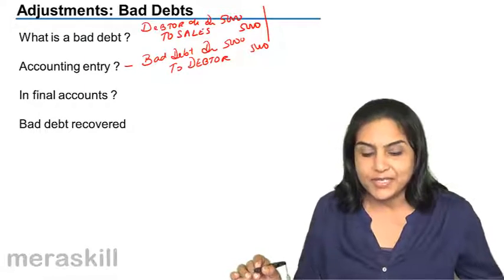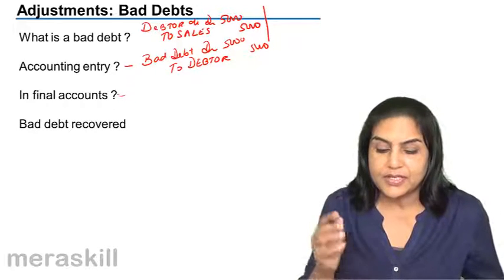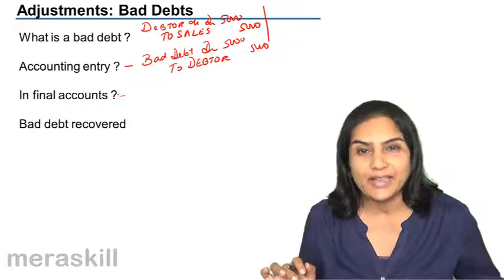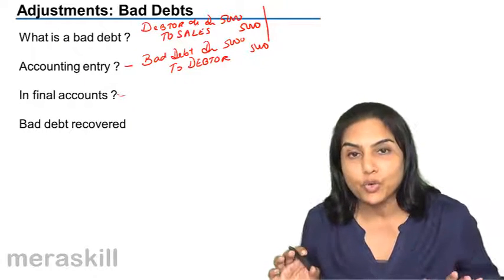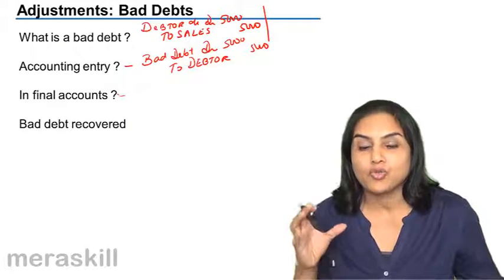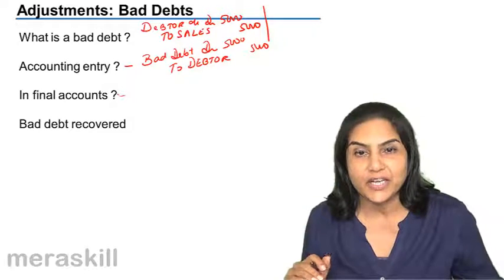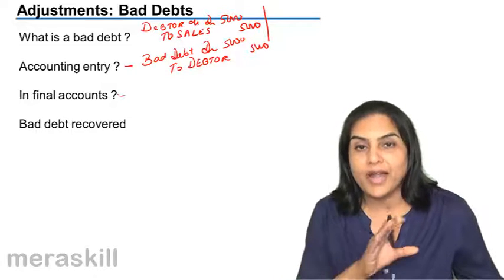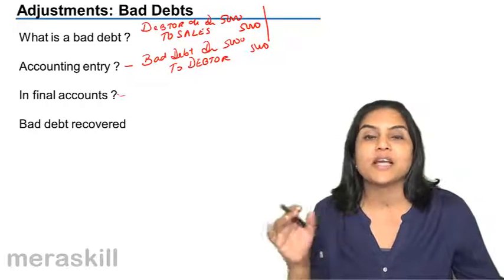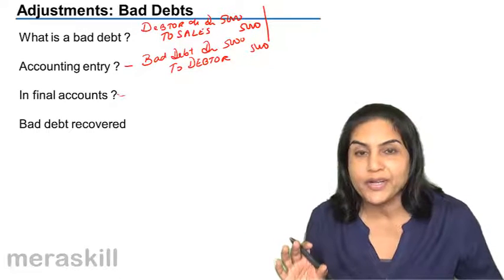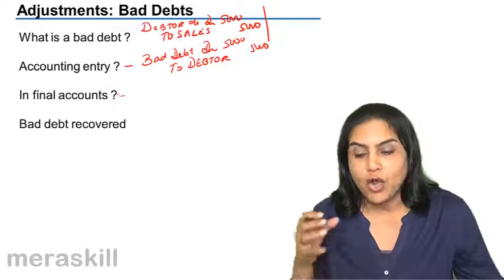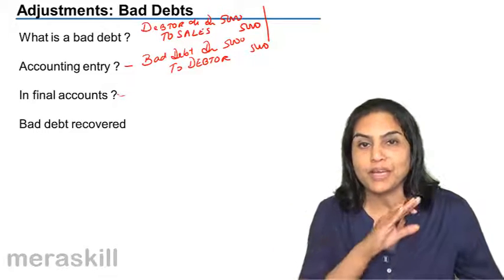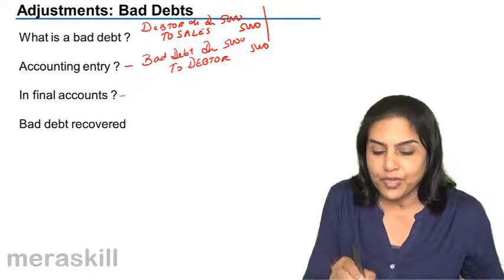Sometimes this information about the debt being bad comes to us only at the year end — it is only at year end that we go through all accounts and realize that money has been outstanding from Mr. X for such a long time and it is very unlikely that he is going to pay now. So the trial balance has been prepared and final accounts are being drawn up. At this point, if we get this adjustment of Mr. X's bad debt being written off, what do we do in the final accounts?